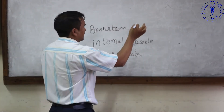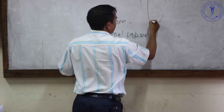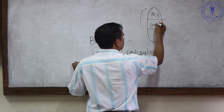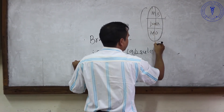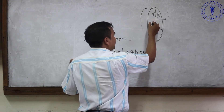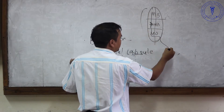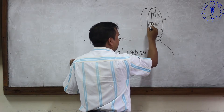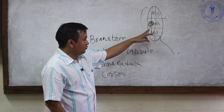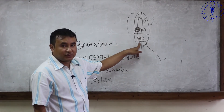Regarding the brainstem — which includes the midbrain, pons, and medulla oblongata — consider what happens when there is a problem in the pons. The corticospinal tract travels through and only crosses at the level of the medulla oblongata. So if there is a problem on the right side of the pons, the patient will have weakness on the left side of the body.